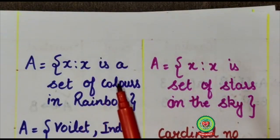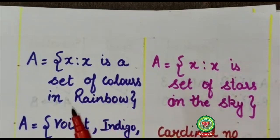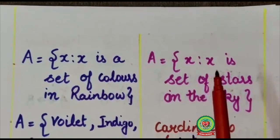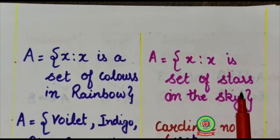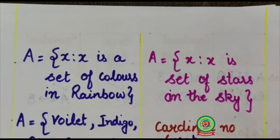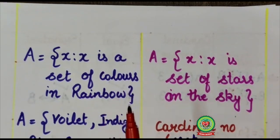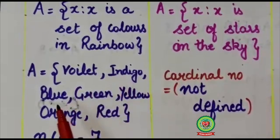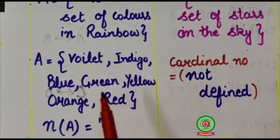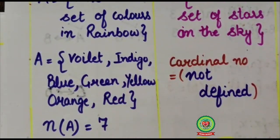Here X, such that X is a set of colors in rainbow. And on the other hand, set X is a set of stars on the sky. Now set of colors in rainbow are violet, indigo, blue, green, yellow, orange, red and its cardinal number is 7.